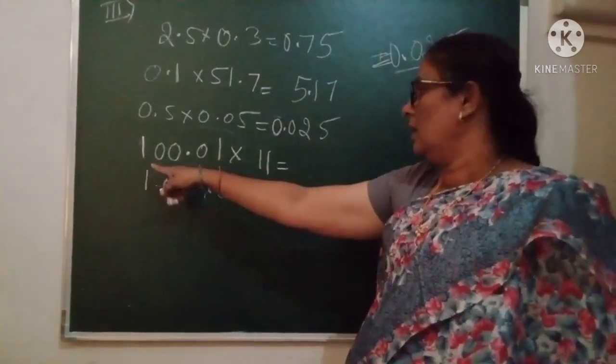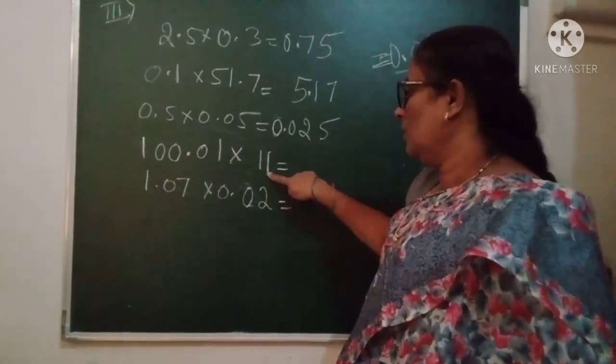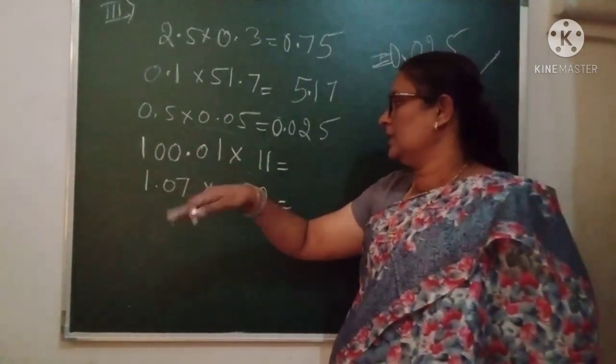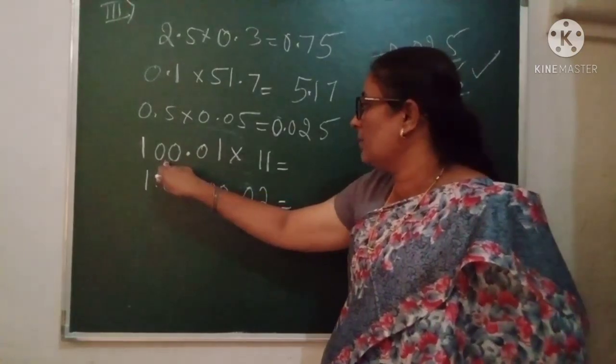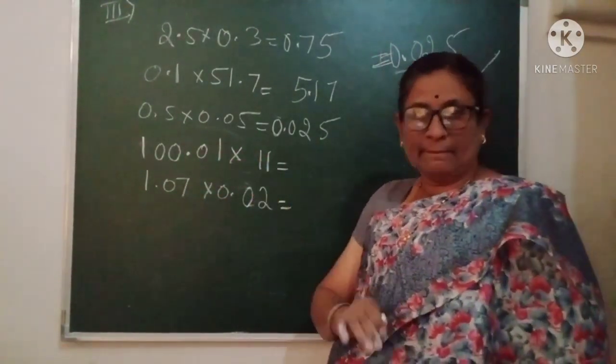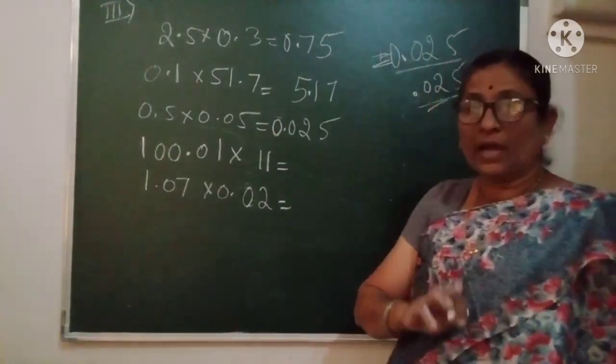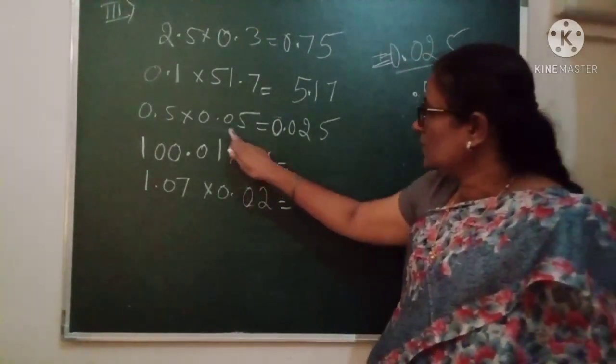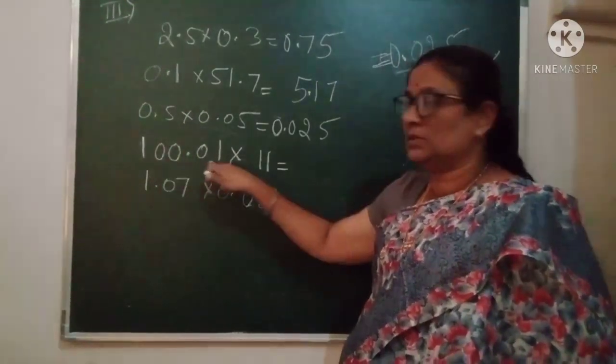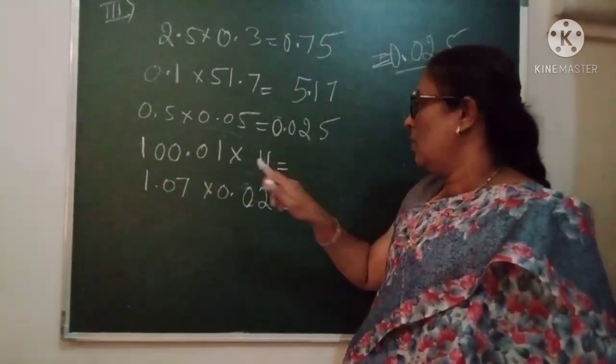Next we have 100.01 × 11. Before I remove the decimal point, if I consider the number, it becomes 1001 × 11, difficult for us to multiply directly. But we can do it in a simple way. What we will do is consider only this number 1001 and multiply that by 11.